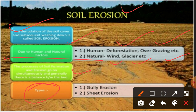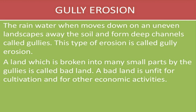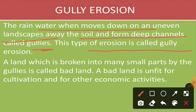There are two types of soil erosion: gully erosion and sheet erosion. Gully erosion is done by rainwater moving down an uneven landscape — it occurs only in areas with uneven or undulating topography. The water washes away the soil, forming deep channels called gullies. First, rills form, and gradually these rills become gullies. This type of erosion is called gully erosion.